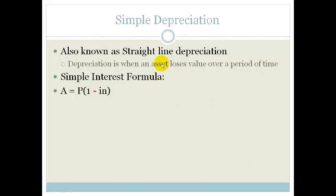So we're using a minus to get a simple depreciation. Your A would be the amount of money that you'll get for your asset after a number of years.